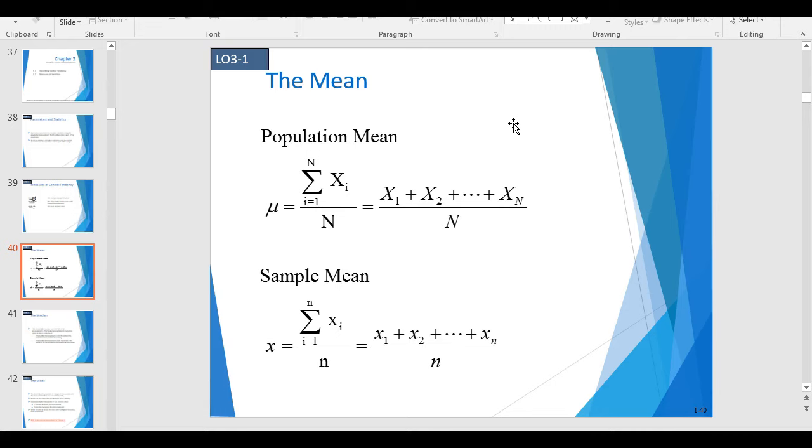These are the formulas for mean. There's population mean, and there's sample mean. Population mean, if we have a class of 40 and we have all of the information, we pull down all of the information on that whole class, we have all of the population information. We can calculate a population mean. If we just have a sample of some population, we can calculate a sample mean.